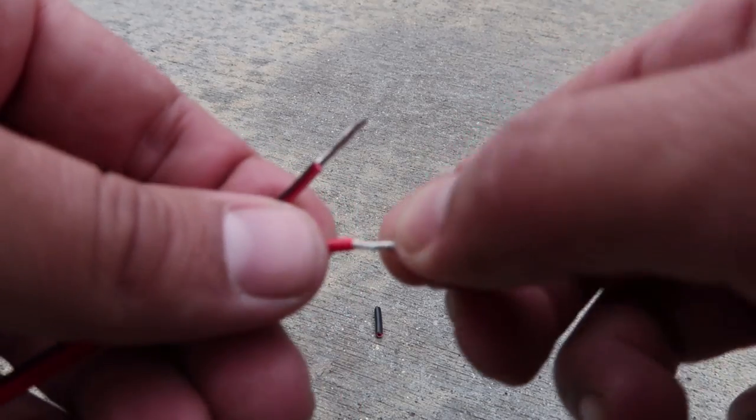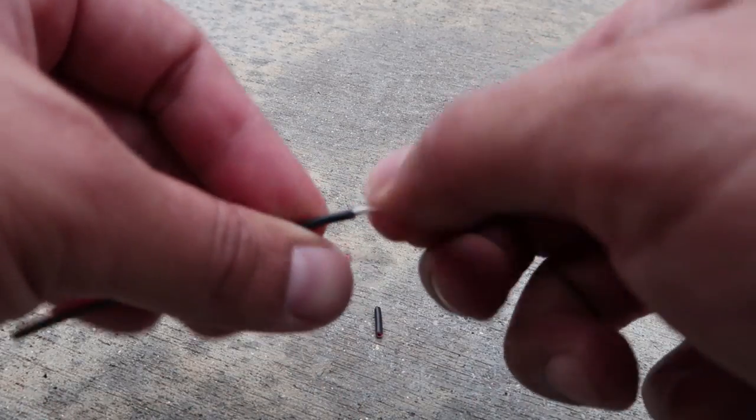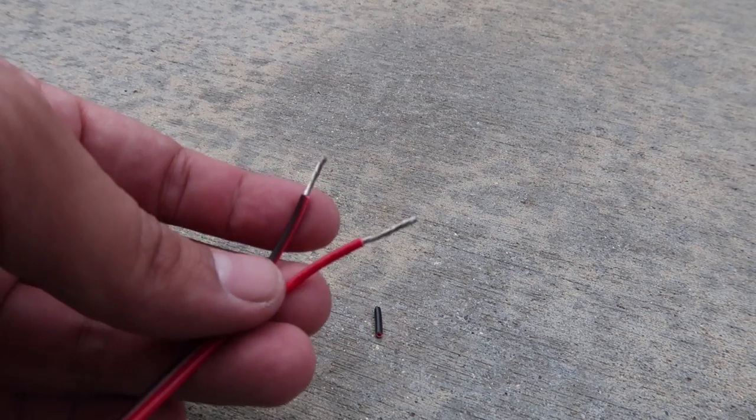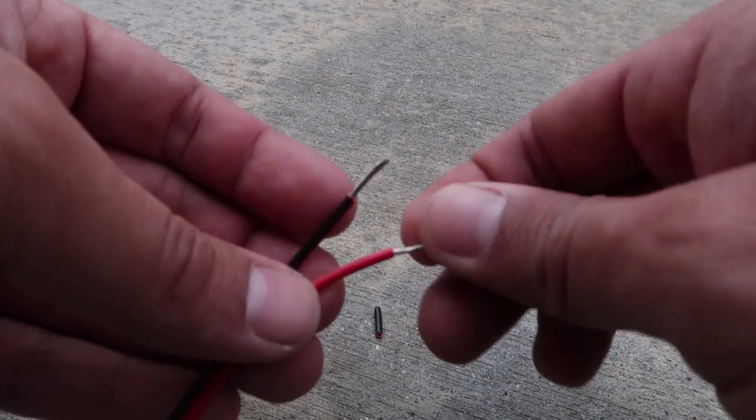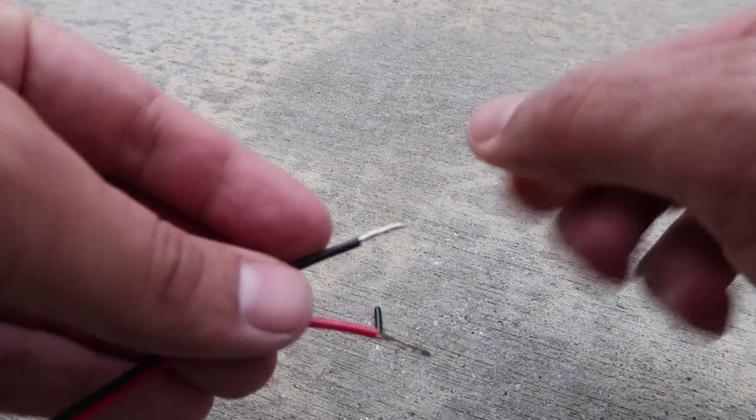I do like to twist them like so so that they're not frayed so that when we put them into the wire connector they have more of a point than just kind of open.